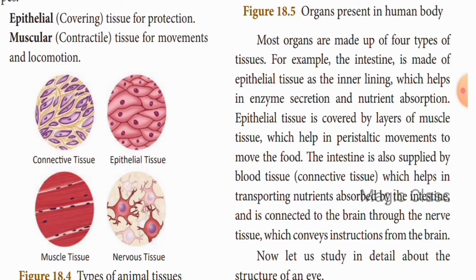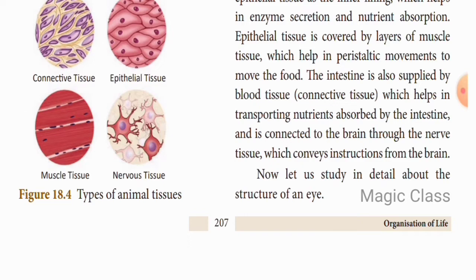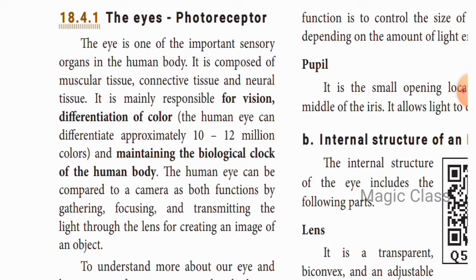The intestine contains epithelial tissue where enzyme secretion and nutrient absorption take place. Connective tissue connects and transports within the intestine. Nerve tissue carries brain instructions. Next, we will look in detail at the structure of the eye as an example of organ-level organization. The eye is a photoreceptor — it responds to light — and is one of the important sensory organs in the human body. It is composed of muscular tissue, connective tissue, and neural tissue.